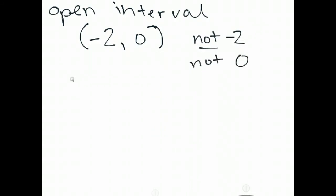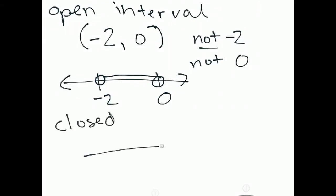We're not including negative 2 and not including 0, but everything in between them. We could view that on a number line. Negative 2 and 0. We're going to put an open dot at negative 2 and an open dot at 0. Then we'll just draw a line between them to denote we mean all the real numbers between them, but not including negative 2 and 0.